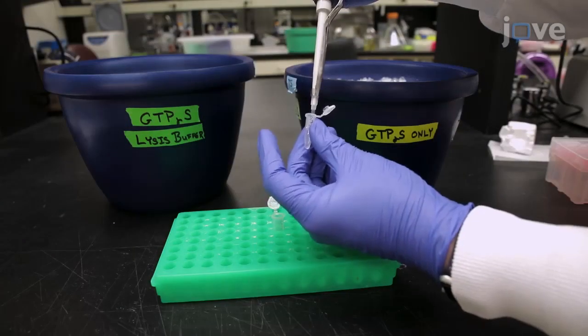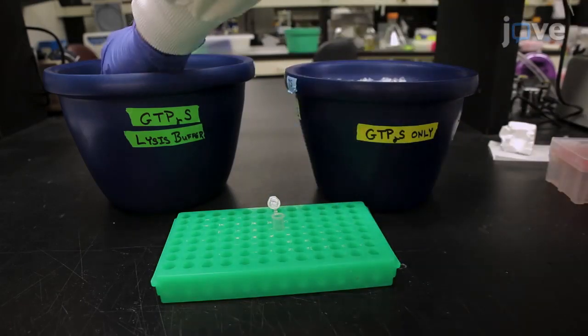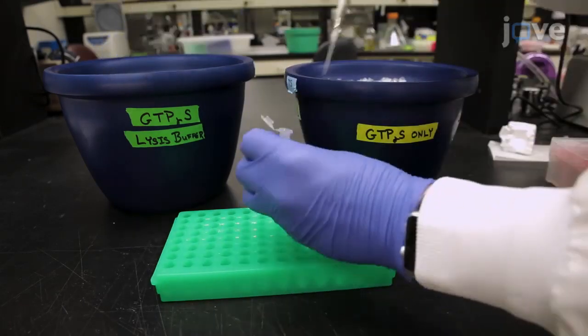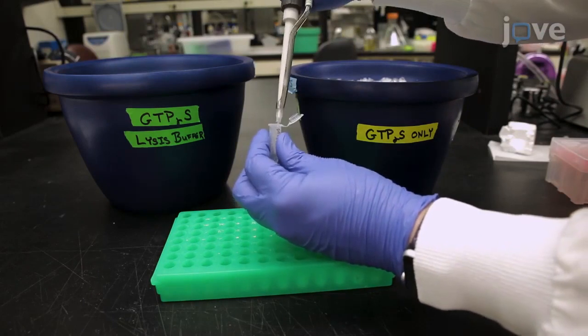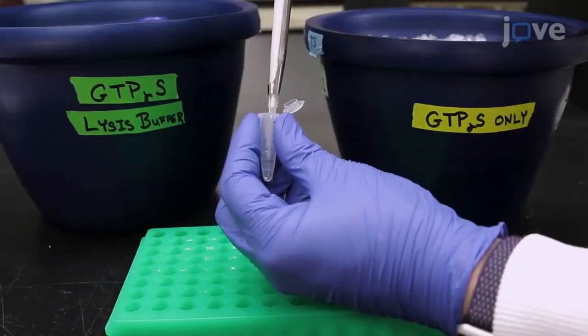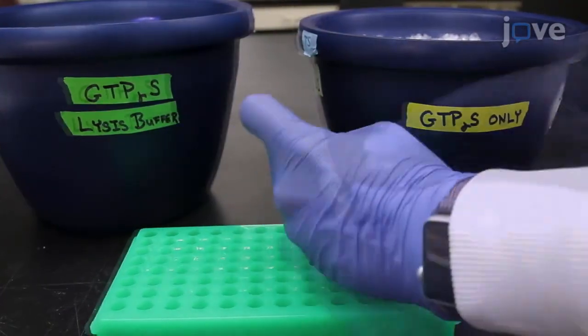To the GTP-γ-S only tube, add 2.7 microliters of 2.5 millimolar GTP-γ-S and 2.7 microliters of lysis buffer. Flick this tube to mix and immediately place it on ice.